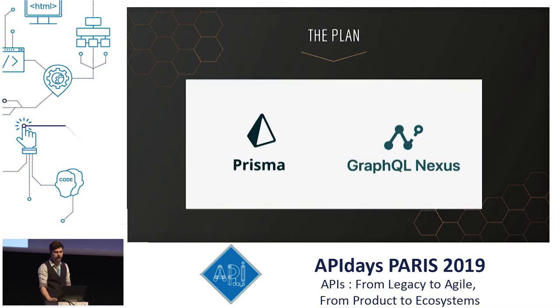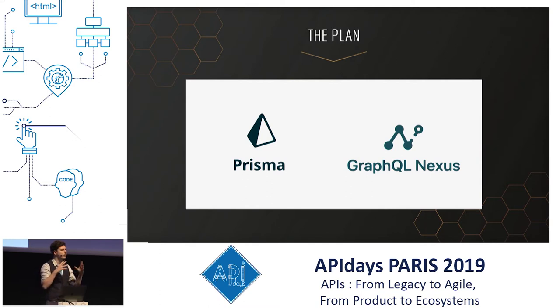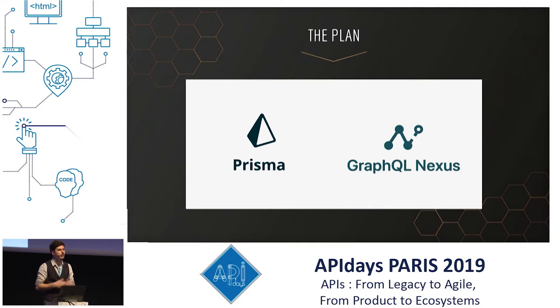To do that, we will use Prisma and Nexus. Prisma will be used to work with the database, and Nexus will be used to provide the GraphQL schema and server.